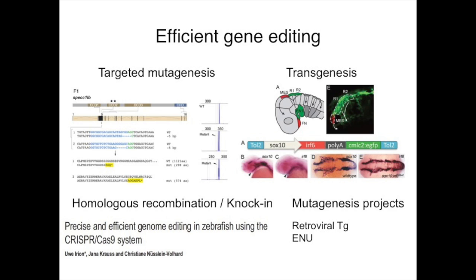The advantages of the zebrafish model are well known. We can make transgenics rapidly to generate reporters or gain-of-function expression studies. The robust mutagenesis projects provide increasingly large libraries of mutants we can call upon for any human candidate gene. We can now do targeted mutagenesis via CRISPR in a rapid, specific, and efficient manner — this has revolutionized the field, replacing morpholino data with properly generated mutants as the standard of analysis.